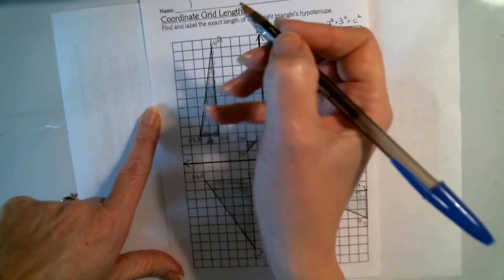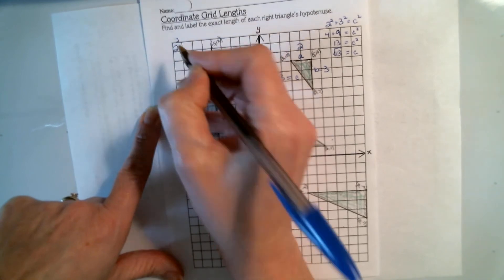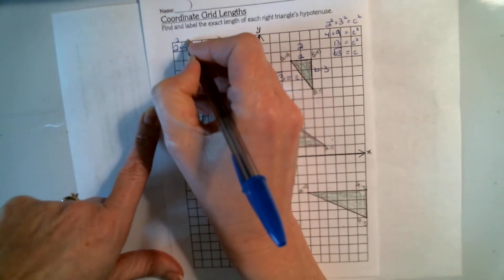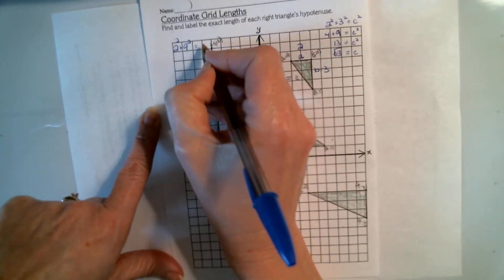And so a squared is 2, 2 squared plus b is 9, 9 squared equals c squared.